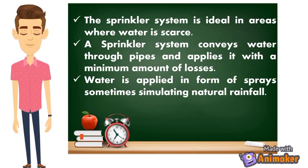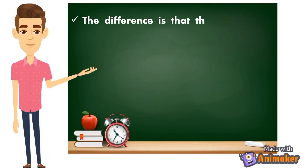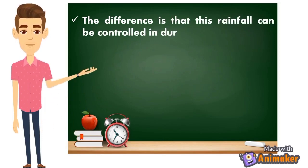Water is applied in the form of fine sprays, sometimes simulating natural rainfall — parang ambon lang, so it won't damage or destroy your plants when watering, unlike when using a hose carelessly. With sprinkler irrigation, the difference is that this rainfall can be controlled in duration and intensity — pwede natin palakasin or pahinain depende sa gusto natin.